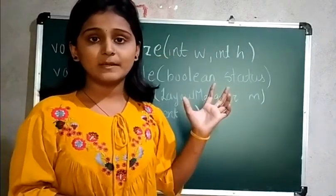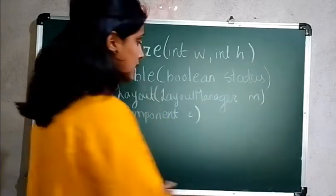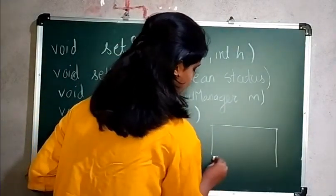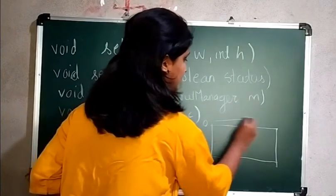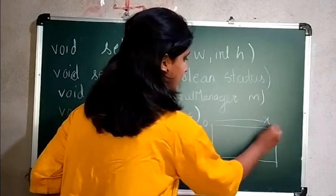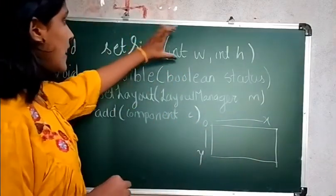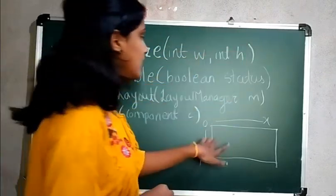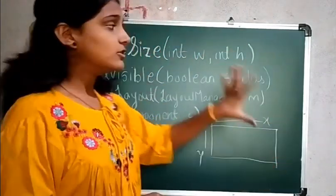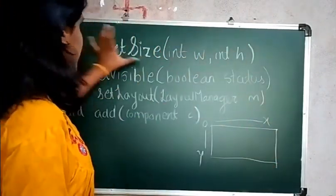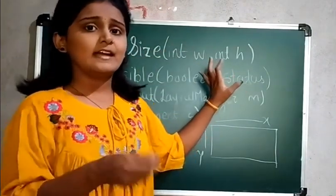The setSize method is used to set the size of a frame. If this is your frame, it starts from zero — this will be your X axis and this will be your Y axis. Suppose you pass 300 and 300, it will have that size. So this method we are going to use to set the size of a component.